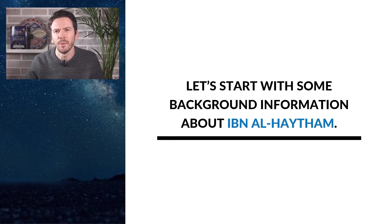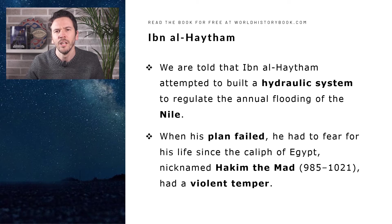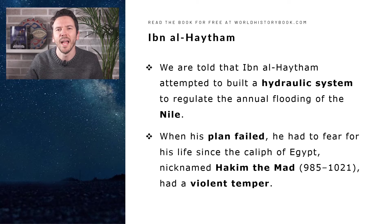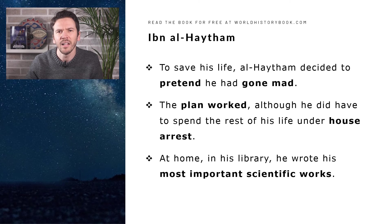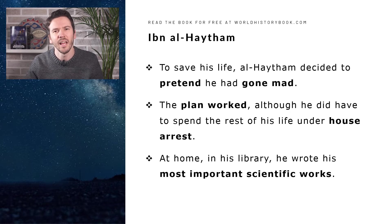Ibn al-Haytham attempted to build a hydraulic system to regulate the annual flooding of the Nile. But when this plan failed, he had to fear for his life since the caliph of Egypt at the time, nicknamed Hakim the Mad, had a violent temper. To save his life, al-Haytham decided to pretend that he had gone mad. The plan worked, although he did have to spend the rest of his life under house arrest. Yet at home in his library, he wrote his most important scientific works.